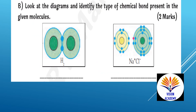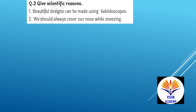Look at the diagrams and identify the type of chemical bond present in the given molecules. In the first figure, the bond is a covalent bond — electrons are shared. In the next figure, the bond is an ionic bond, where electrons are not shared.